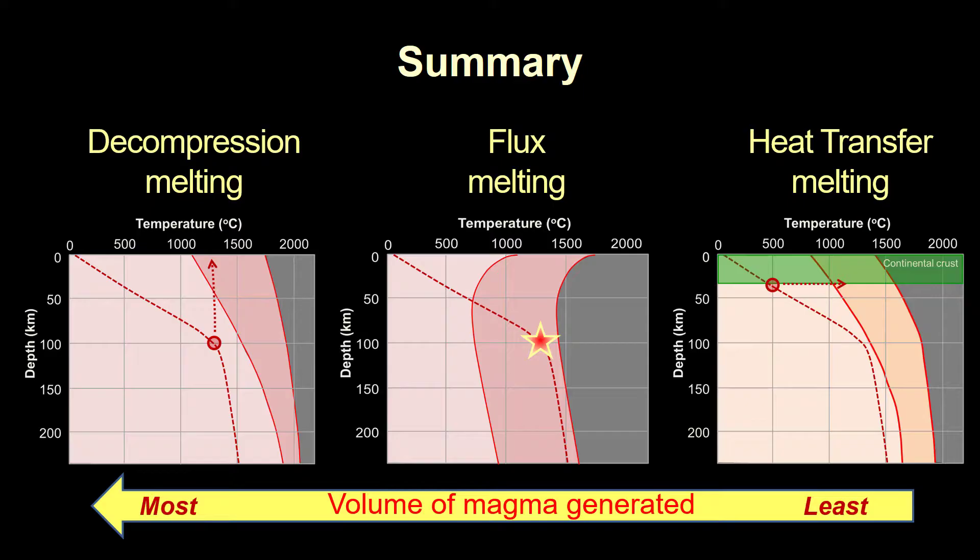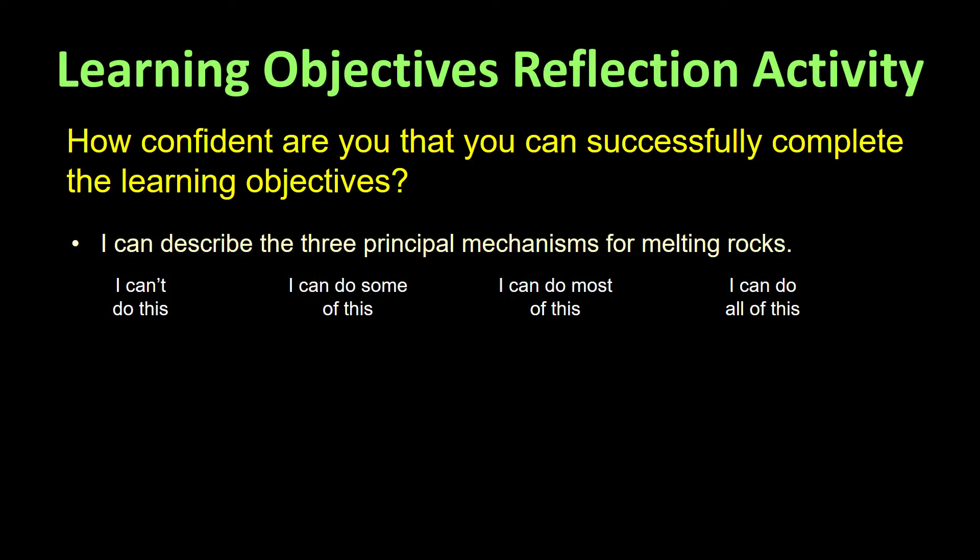However, some of the magma produced in these settings is also produced by heat transfer melting. Finally, this latter process is also associated with continental rifts. Here's our learning objective for this video. How confident are you that you could successfully respond to this prompt?